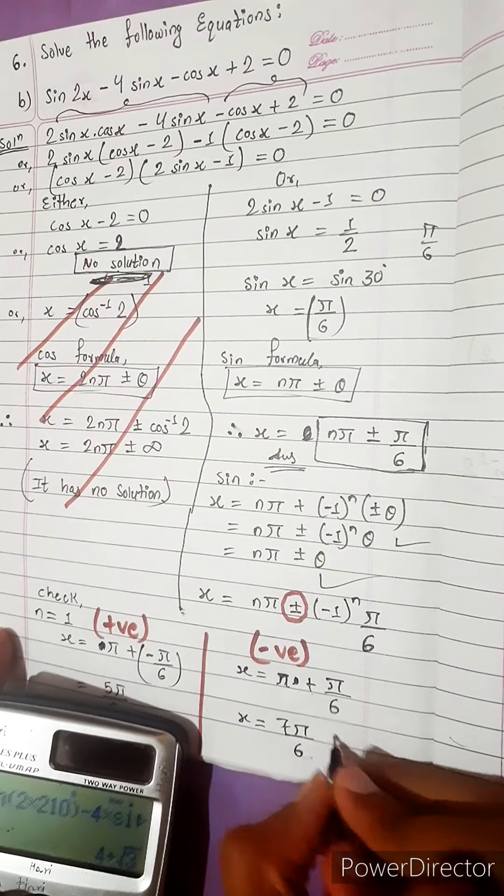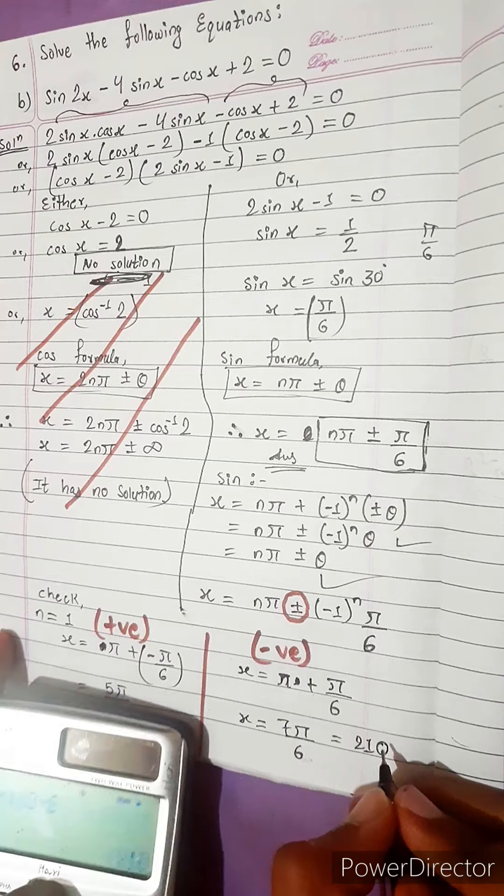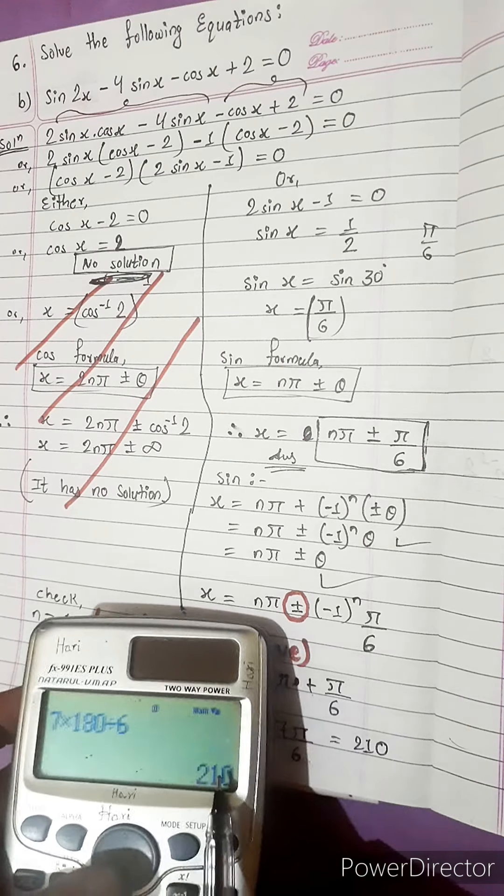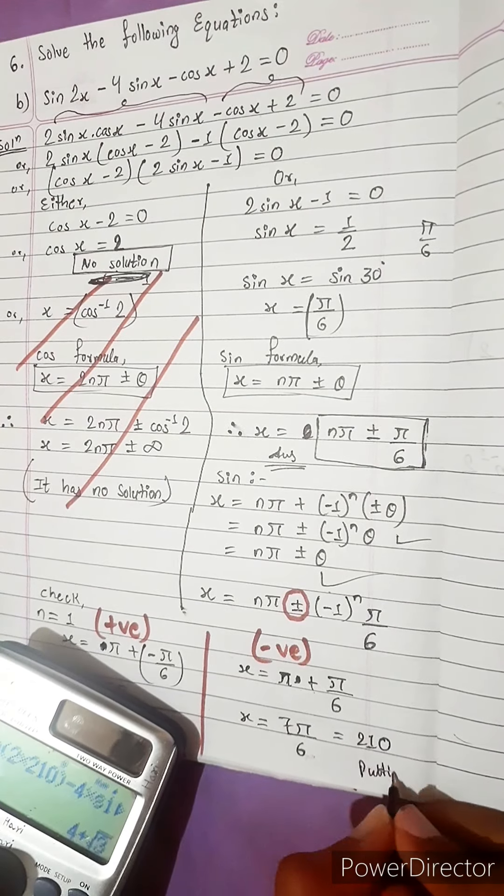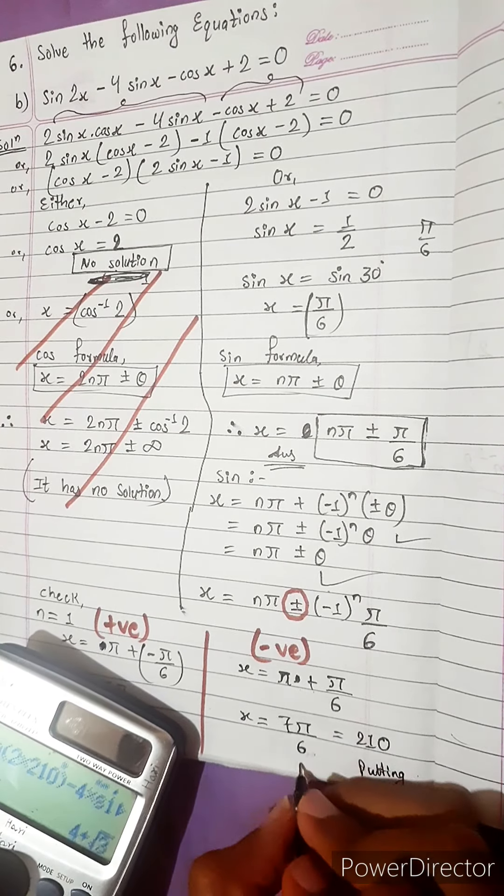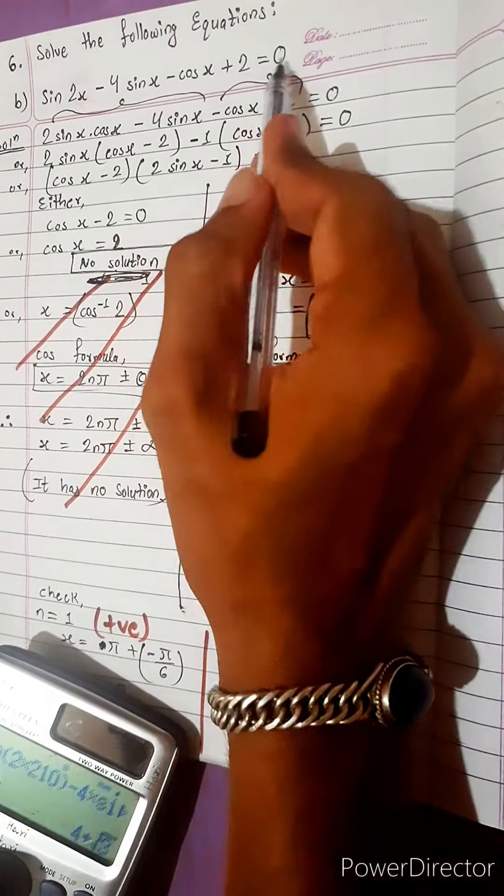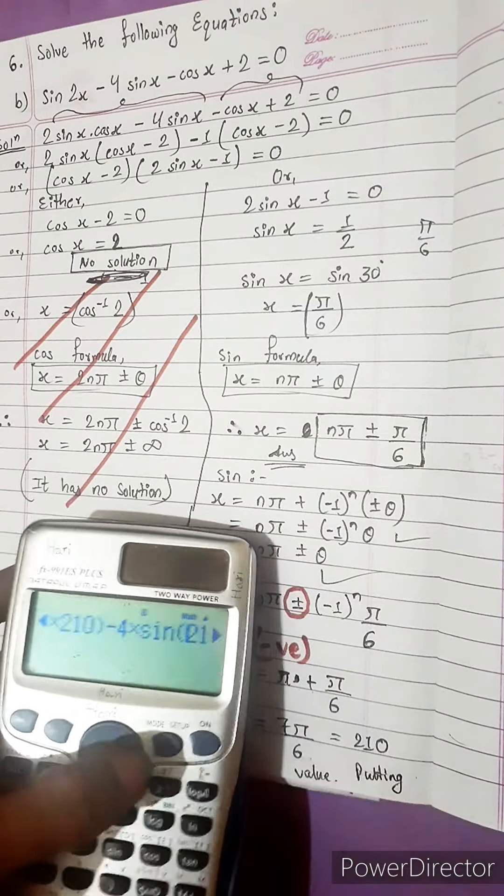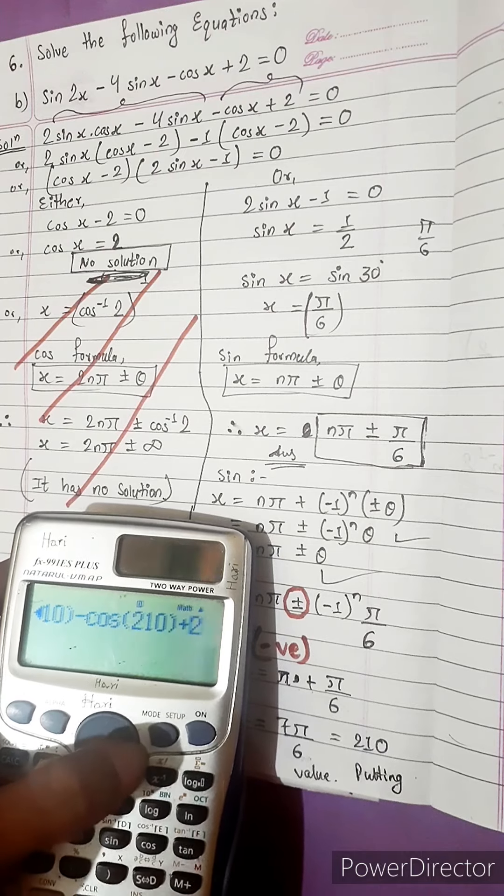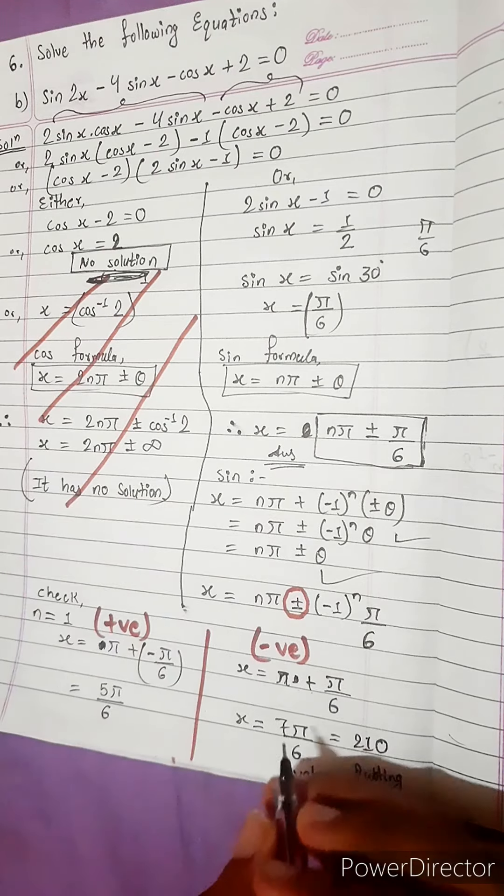7 pi by 6 is greater than 1. And look, using negative value, if we put 7 pi by 6 in this equation, 7 pi by 6 equals to 210, I think. And if we put 210 in this equation, we will not get 0. Actually we should get 0, but we are not getting 0.